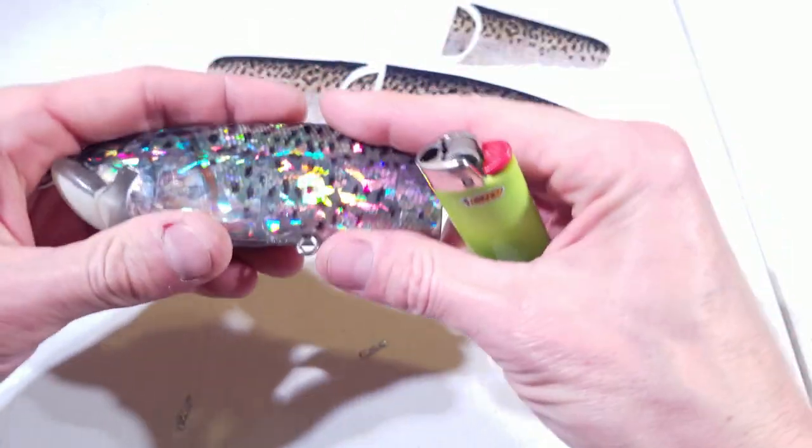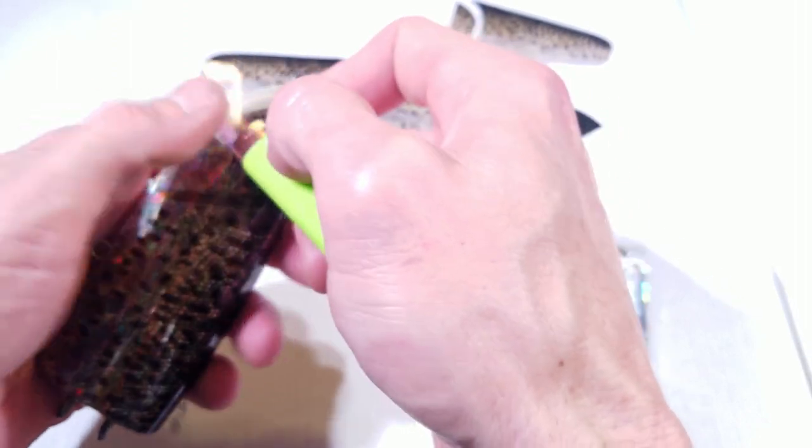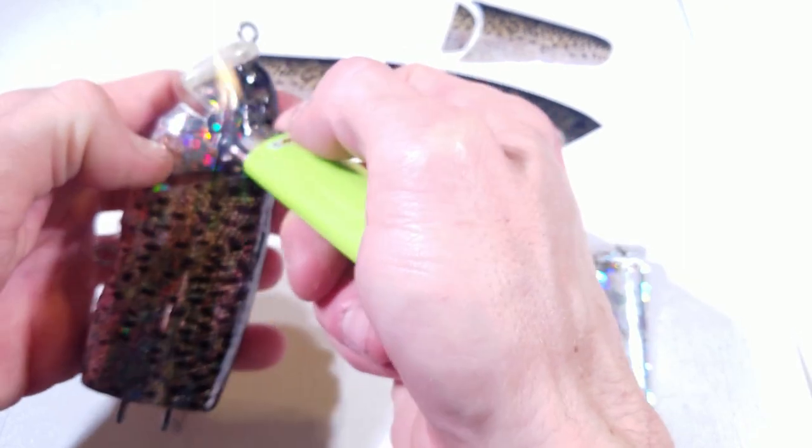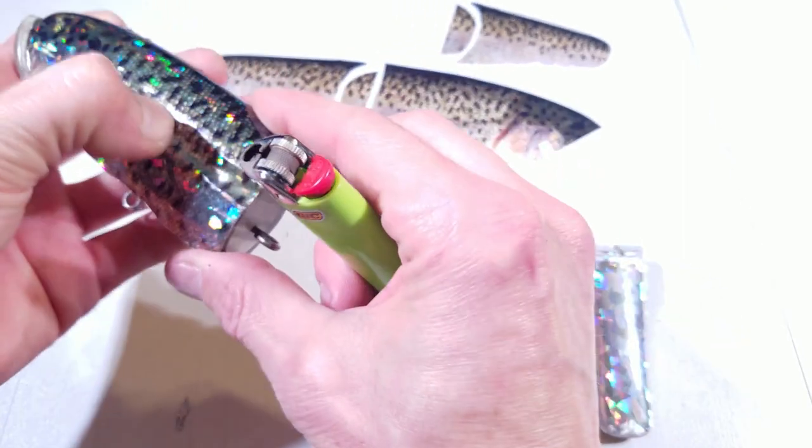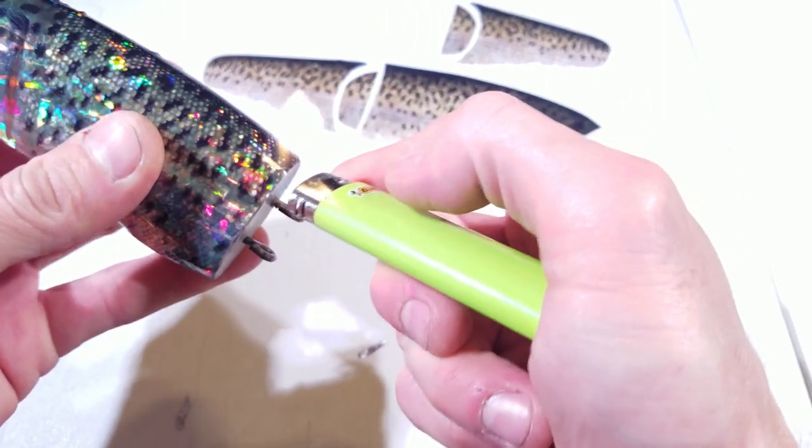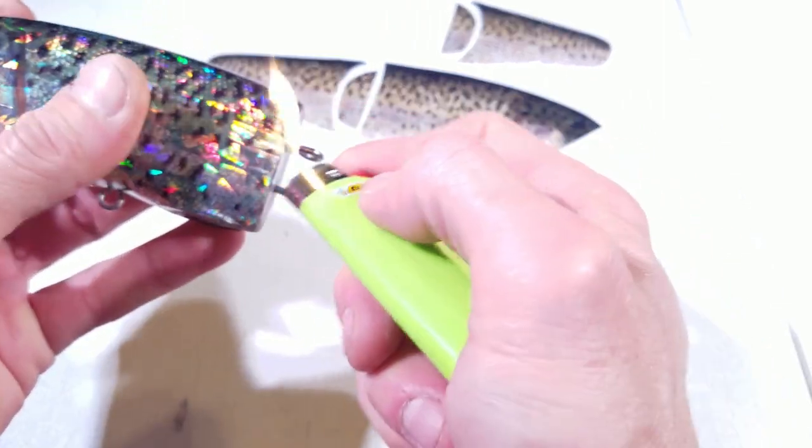Go over all the edges with your lighter, flattening everything into place and just making sure to get any air bubbles or creases out of the wrap.